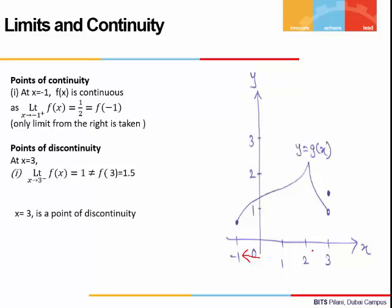Let's come to x = 3. When we move towards 3 from the left, the graph of the function is moving towards 1. Since the function is not defined to the right, we can only take the limit from one side. The limit as x approaches 3 is 1, but the value of the function is given to be 1.5. Since the limit is 1 and the function value is 1.5, x = 3 is a point of discontinuity.